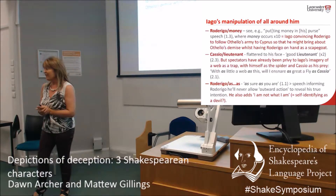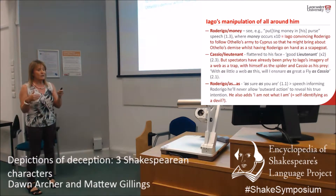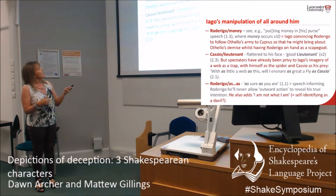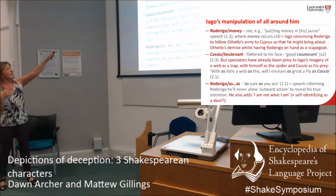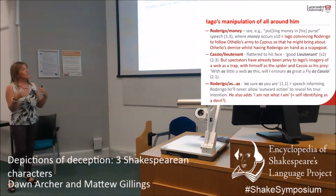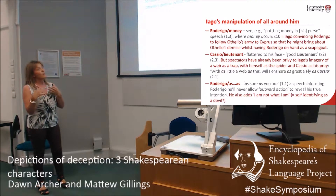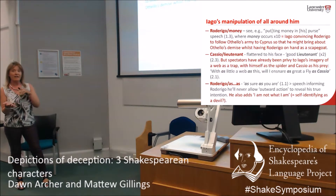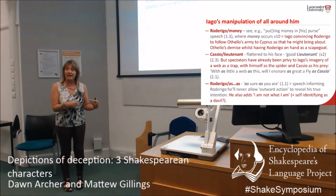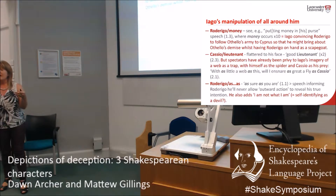Moving on, Iago is a really well-known villain in terms of Shakespearean characters, but there's something interesting if we put his keywords together. Rodrigo and money are keywords, and I've put them together because of the 'putting money in his purse' speech in Act 1, Scene 3, where money occurs 10 times. Effectively Iago is trying to convince Rodrigo to follow Othello so that Rodrigo can be his scapegoat when he sets up everybody else in the play. So Rodrigo and money appearing together tells you something about where the plot's going. We also have Cassio and the lieutenant.